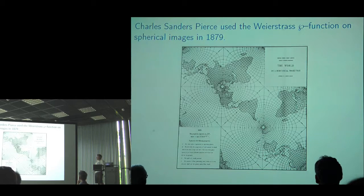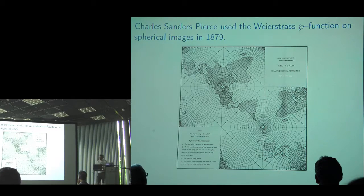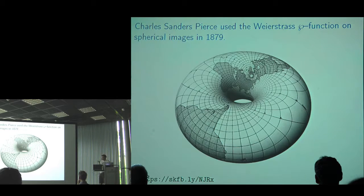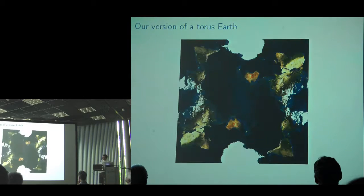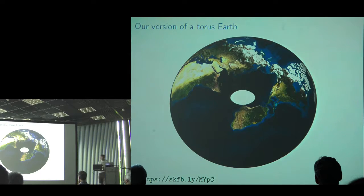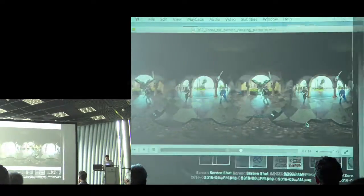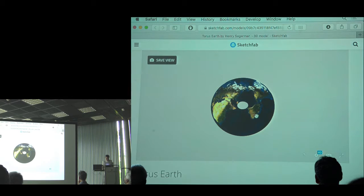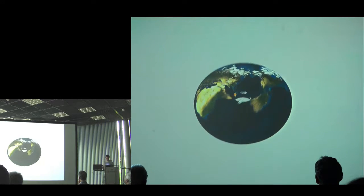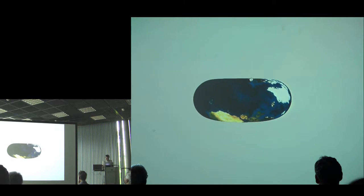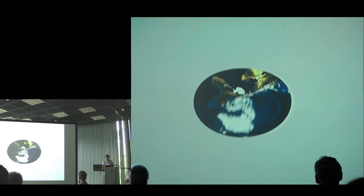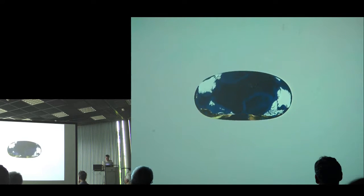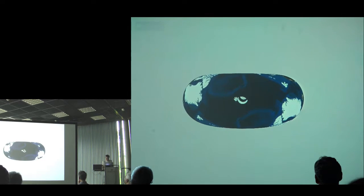We're certainly not the first to think about applying this to spherical imagery. Charles Sanders Peirce used this exact same map in 1879 as a proposal for a different projection of the Earth. We put it on a torus — here's a toroidal Earth. The front and back sides are the same picture, there's a hole through the middle, and you can see the rotational symmetry of the two-fold branch cover.